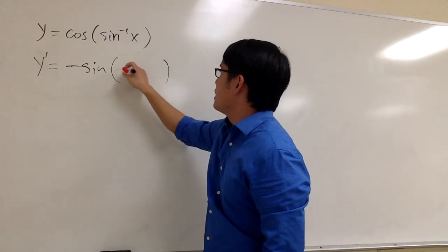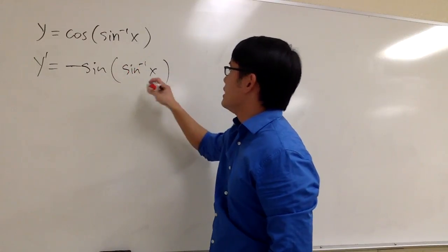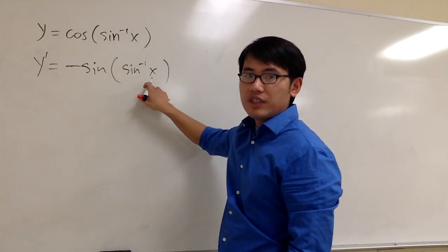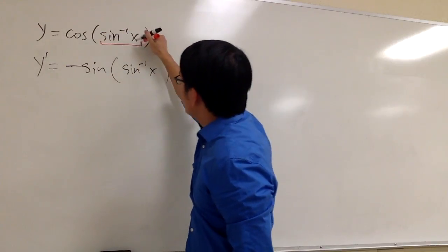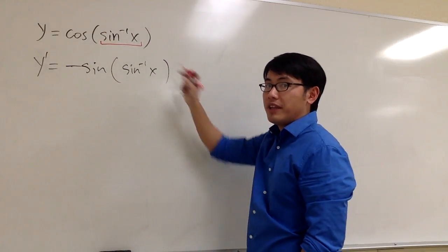So we just have to maintain the inverse sine x inside. But then because of the chain rule, we look inside right here and multiply by the derivative of the inside.